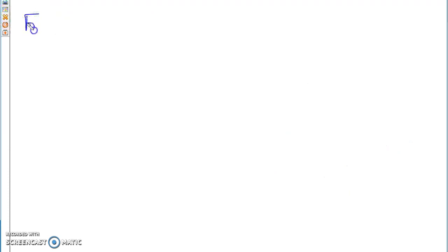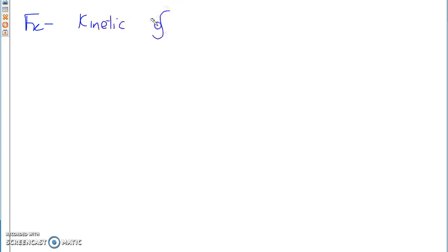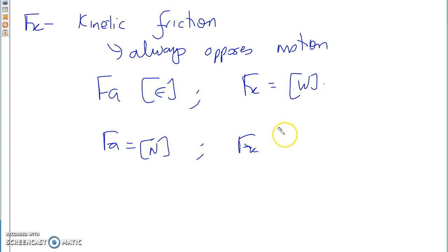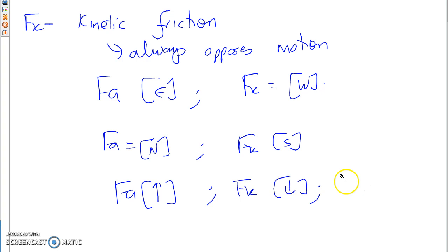Our first friction is FK, which is kinetic friction. Kinetic friction always opposes motion. So if my F applied is moving east, then your FK is moving west. If your F applied is moving north, your FK is moving south. If F applied is moving up, then your FK is down — and FG would also be down, so two forces. It depends on the scenario.